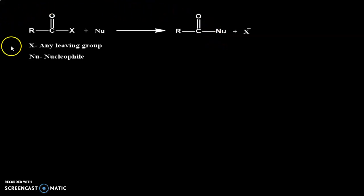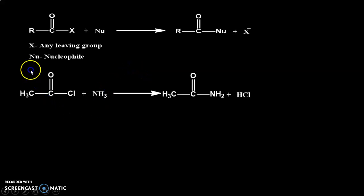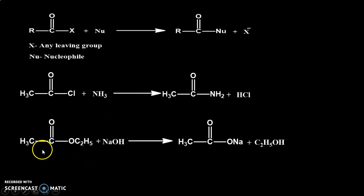Now let's also look at some examples. For example, consider an acid chloride — alkyl chloride — R-C(=O)-Cl. If we take ammonia as the nucleophile, the nitrogen of ammonia has a lone pair of electrons, so it will attack on this carbon. Afterwards, the chlorine will leave as the leaving group, and we will get the product R-C(=O)-NH2 plus HCl as a byproduct.